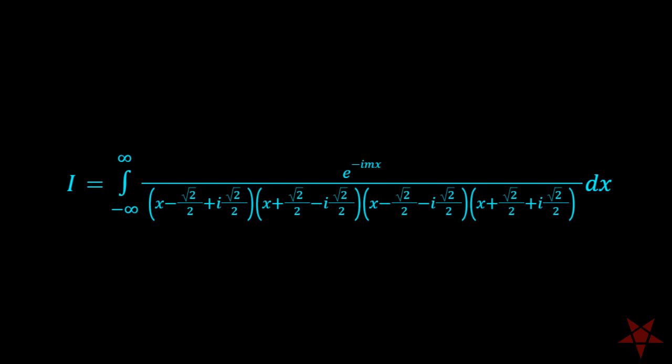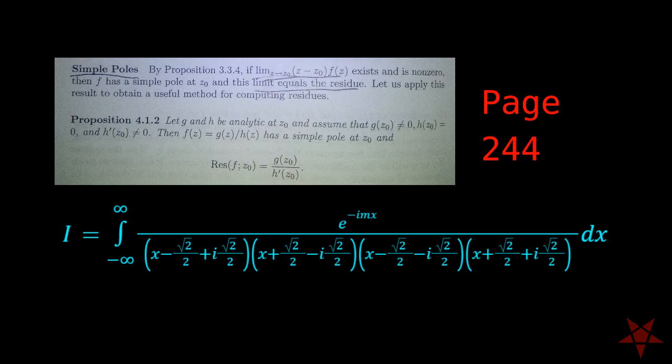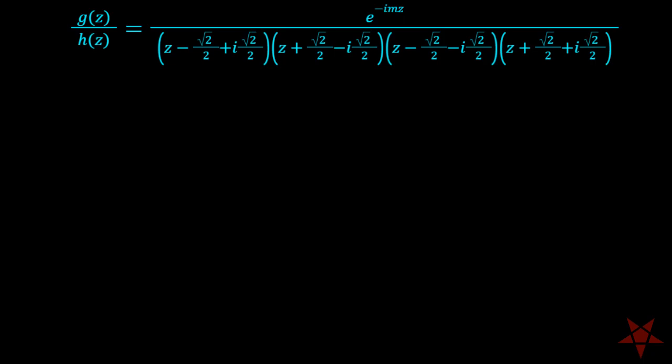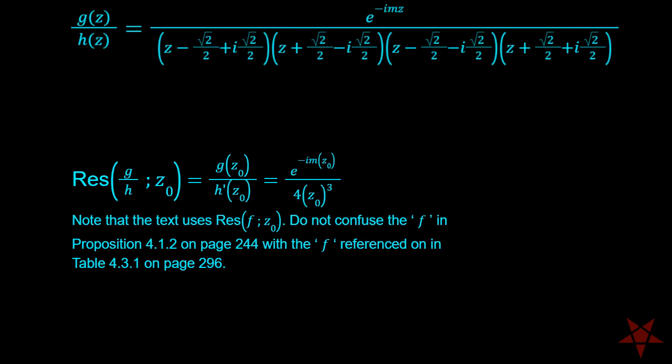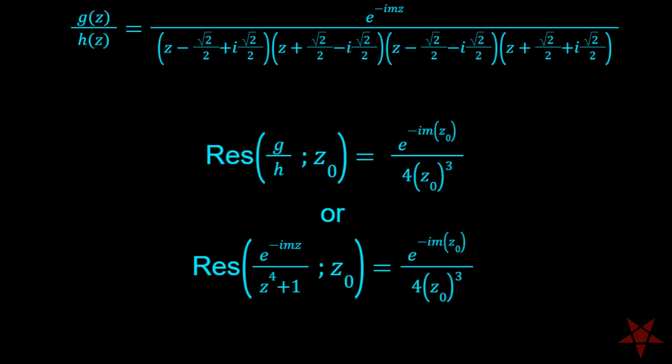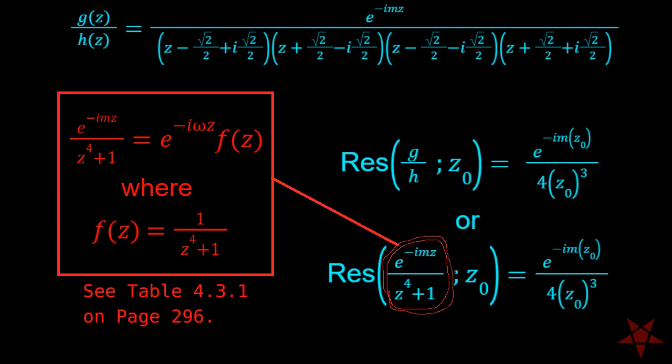Since we are dealing with simple poles, we can use Proposition 412 on page 244. This requires that we separate the integrand into functions g and h for the numerator and denominator respectively. The function g must be non-zero at each pole, h must be zero, and h prime must be non-zero. Note the shortcut that I used for calculating h prime of z, and for your sake, please avoid going down the rabbit hole that is calculating the derivative of the expanded version of h of z. With those requirements satisfied, we have minus e to the im z0 over 4z0 to the third power as an expression for the residue of g over h at z0, and we can now use it to calculate the value. Do be mindful of the fact that table 431 has the expression e to the minus i omega z times f of z as the function whose residue we seek, and that it is equal to g over h in this context, with the variable m taking the place of omega.